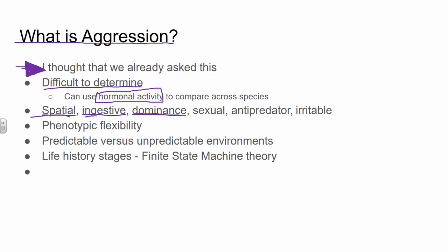So spatial, ingestive, dominance — there's also sexual aggression. This is related to obtaining mates or protection of mates. We talked a lot about the red deer barking at each other 3,000 times and then fighting each other — that's for access to mating opportunities. Remember the lobsters who would defend the molting female lobster. So that's going to fall under this sort of sexual aggression definition.